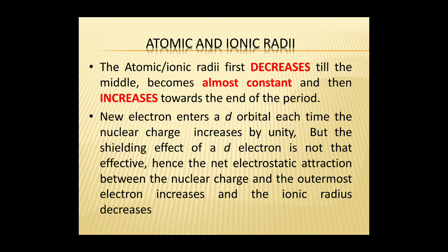Atomic and Ionic Radii: The atomic and ionic radii first decrease until the middle of the period, become almost constant, and then increase toward the end of the period. Each time the nuclear charge increases by unity, a new electron enters a D orbital, but the shielding effect of the D electrons is not fully effective. Hence, the atomic and ionic radii of transition elements are smaller than those of the S block elements but larger than those of the P block elements.